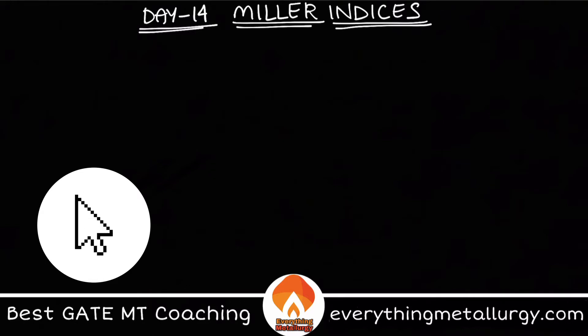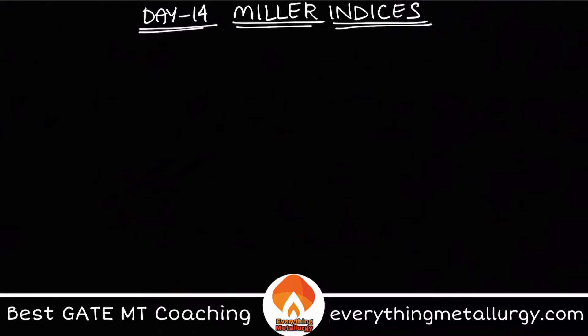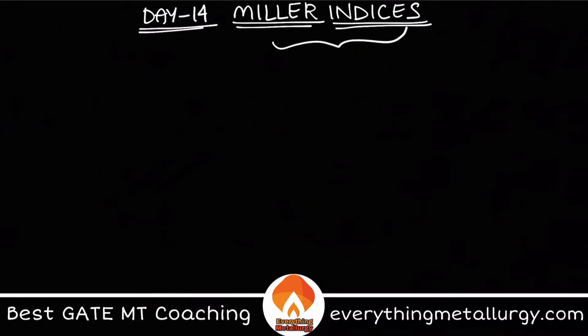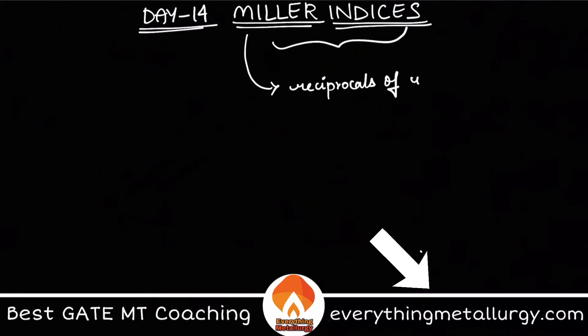So what are Miller indices? In the previous video we saw that we represent different slip planes and slip directions in terms of things like 111, 100, and so on. But how do we get to those particular values? Those are nothing but Miller indices. Miller indices are basically the reciprocal of the intercepts that are made on the axes.